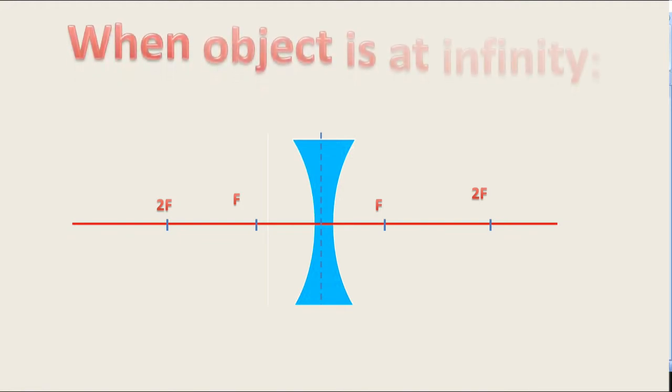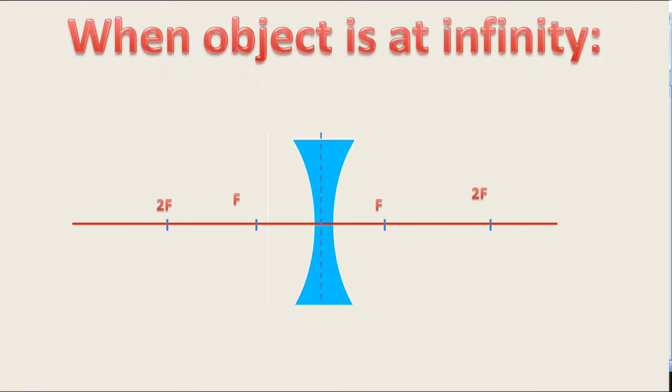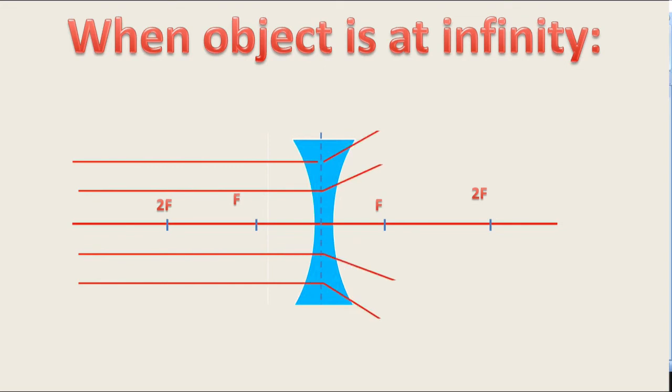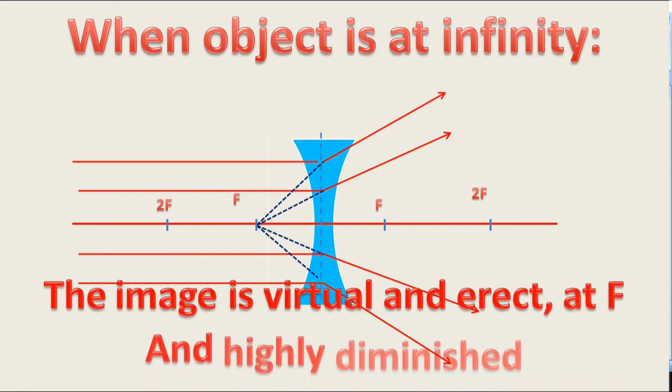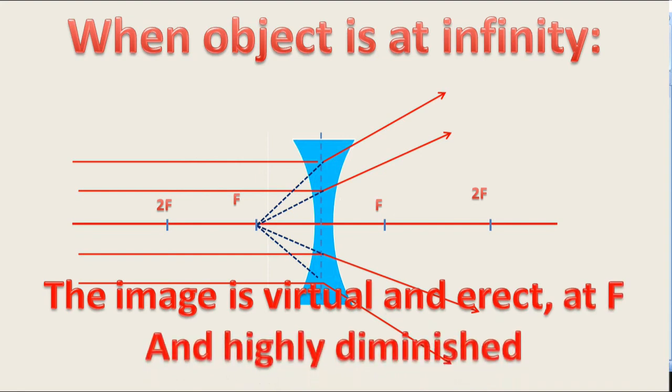When object is at infinity, then concave lens forms image as the ray of light coming from object diverges from point F. The image is forming same side of object. The nature of image is virtual, erect. The image forms at F and highly diminished in size.